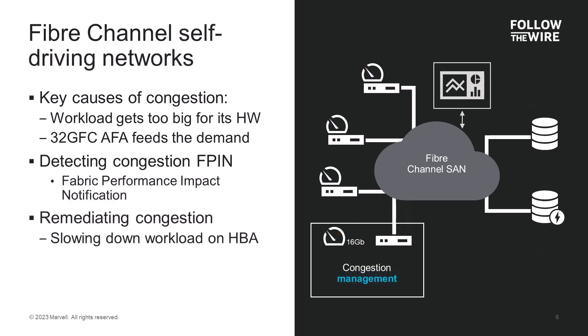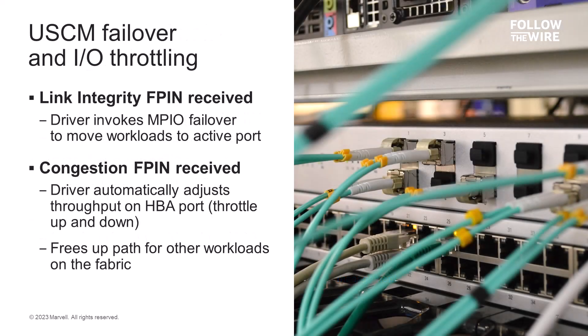But this user is smart — they've deployed Q-Logic HBAs in their hosts. The Q-Logic HBA in the offending server can then take corrective action to implement I/O leveling and reduce the overall SAN data flow. It can slow itself down to the point where buffer credits are freed up and SAN performance can return to normal for all the other hosts and storage devices. With Marvell's Universal SAN Congestion Mitigation, or USCM, capability, when select F-PINs are received, the Q-Logic HBA driver takes action to address them.